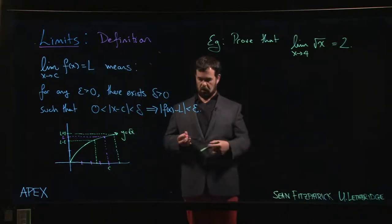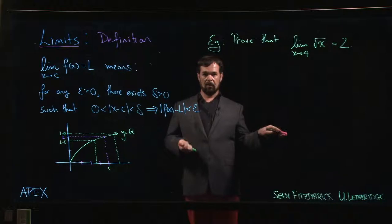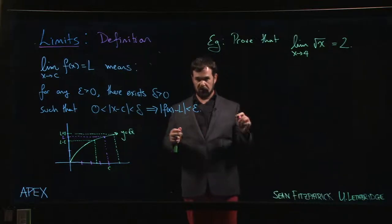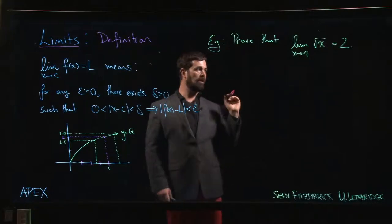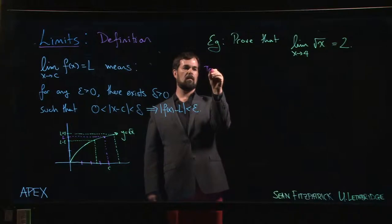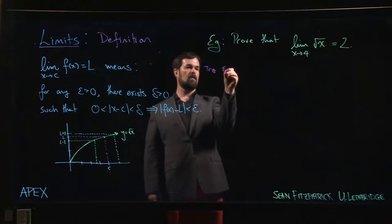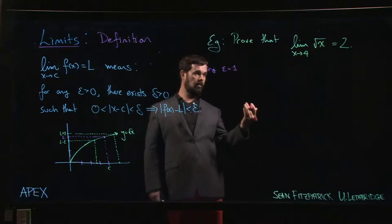You want to make your argument general. That said, let's see what happens for a particular choice first and then we'll expand from there. In this example we're dealing with a square root function. Let's say epsilon is one—somebody hands you one, you want to make things work when epsilon is one.